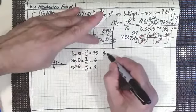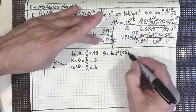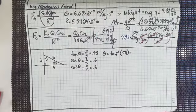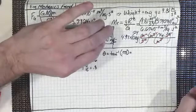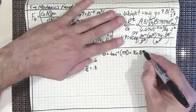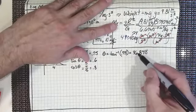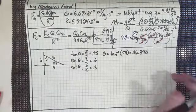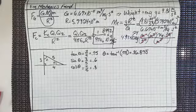We could find theta by saying theta equals the inverse tangent of 0.75. Punching that into the calculator gives 36.87 degrees — really 36.8699, so we can say 36.870 degrees, where the bar over the zero indicates it is a significant figure, not a rounding artifact. It is genuinely 0 because it continues as 0.86990.